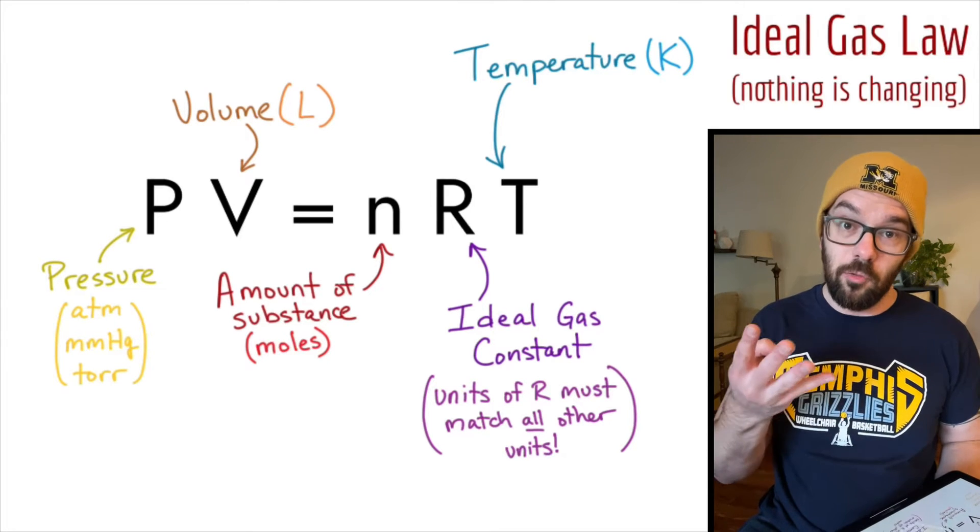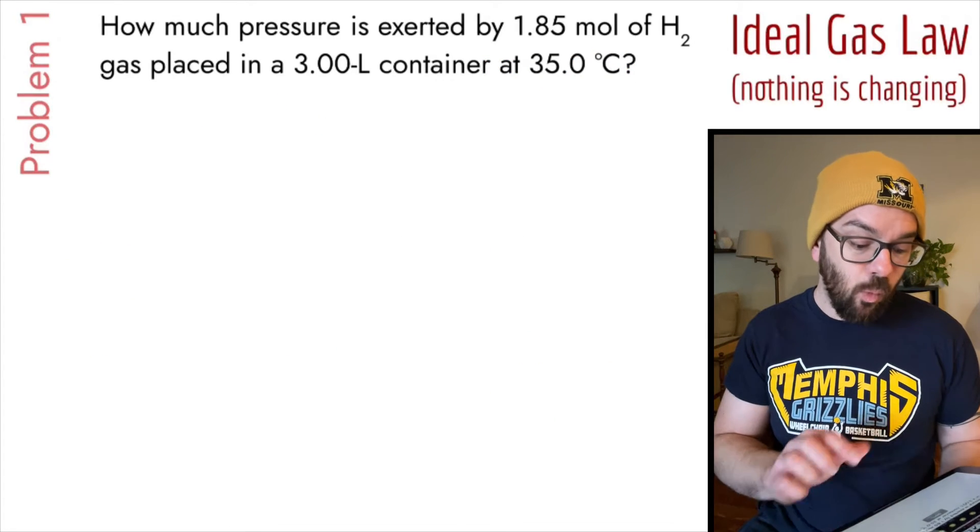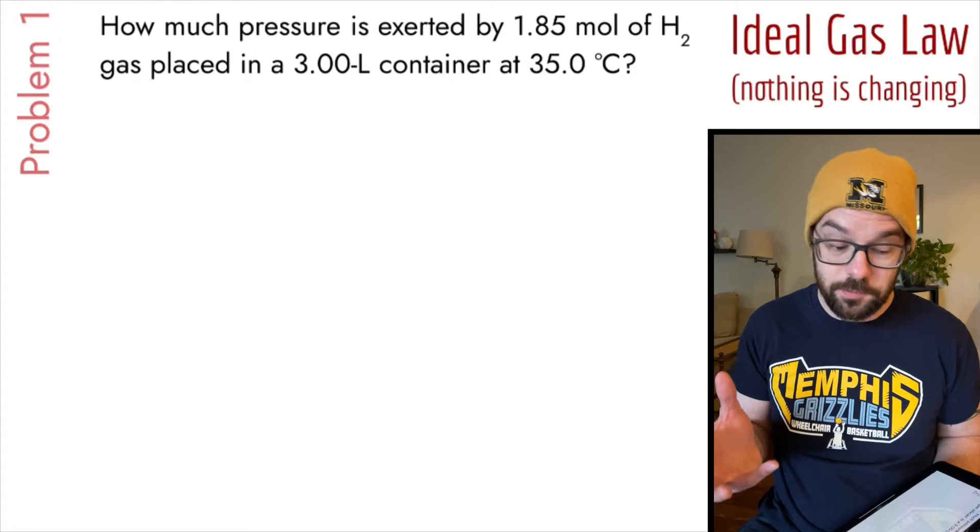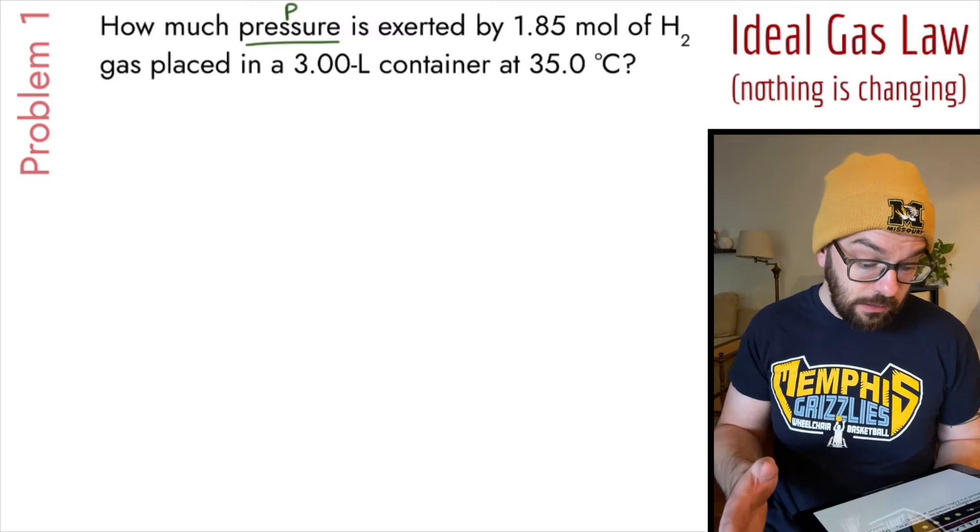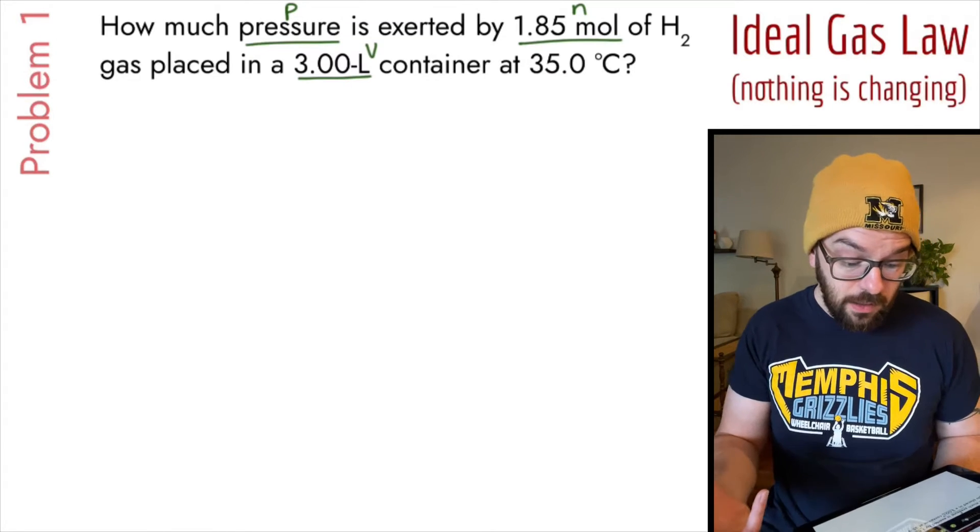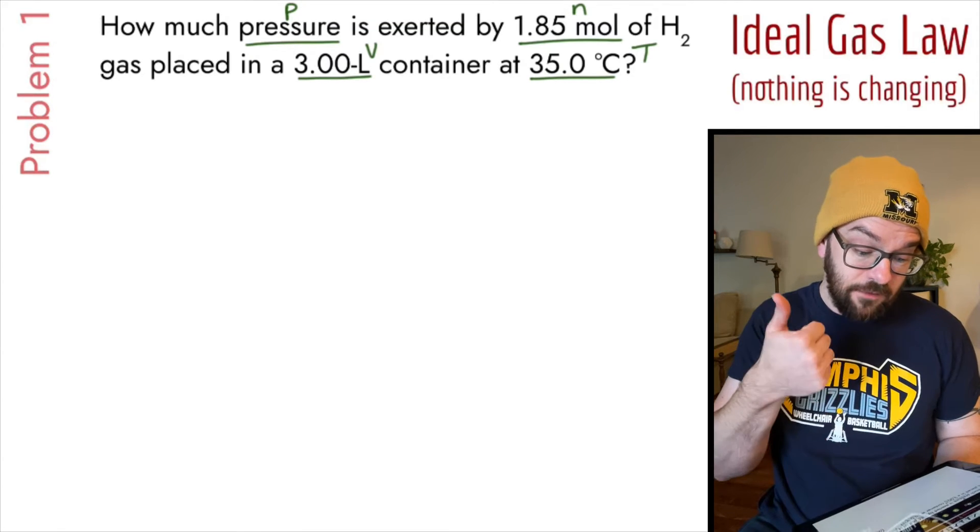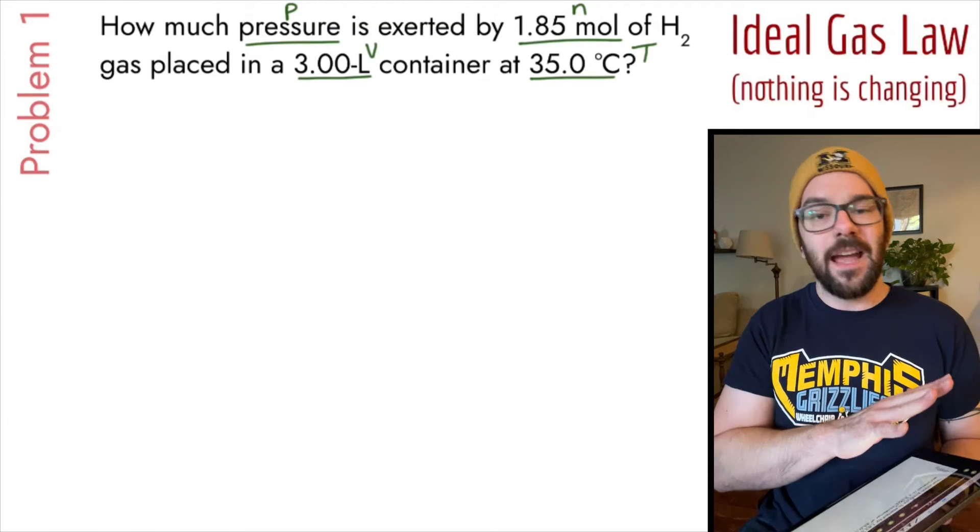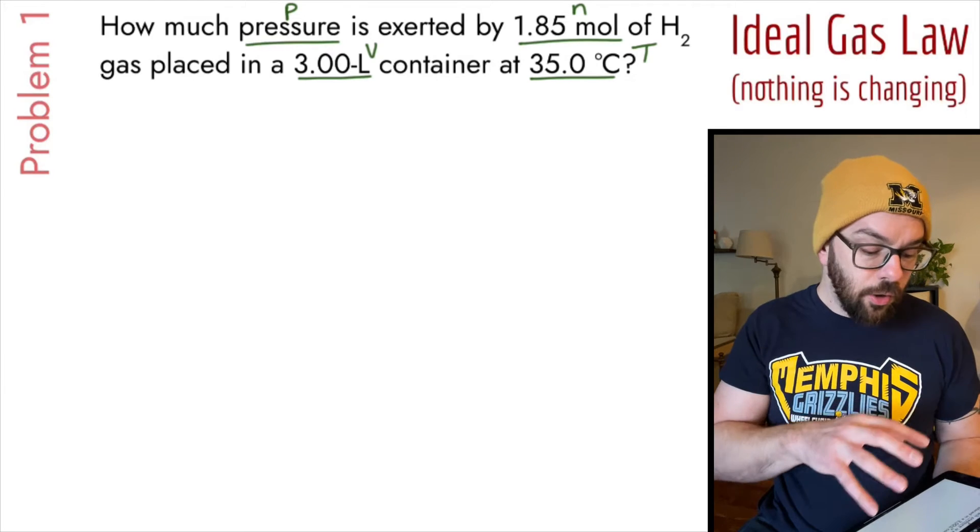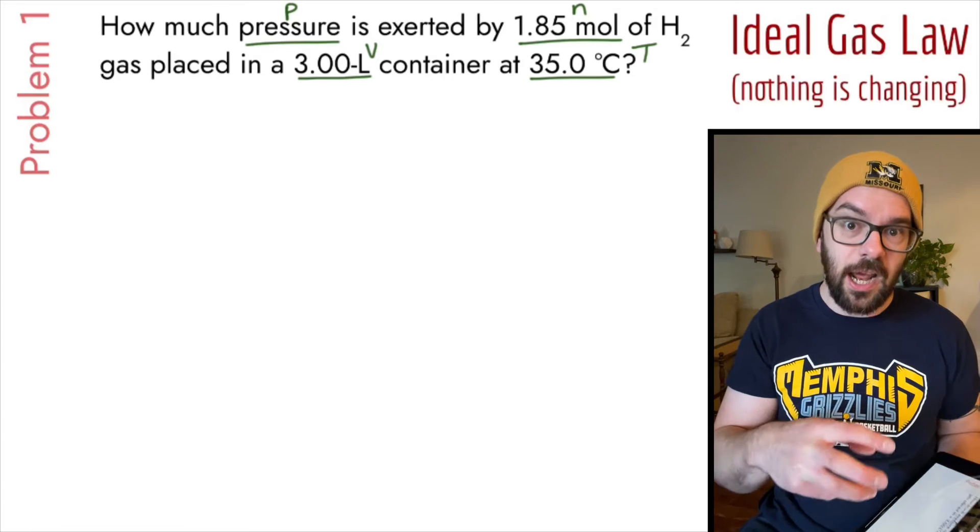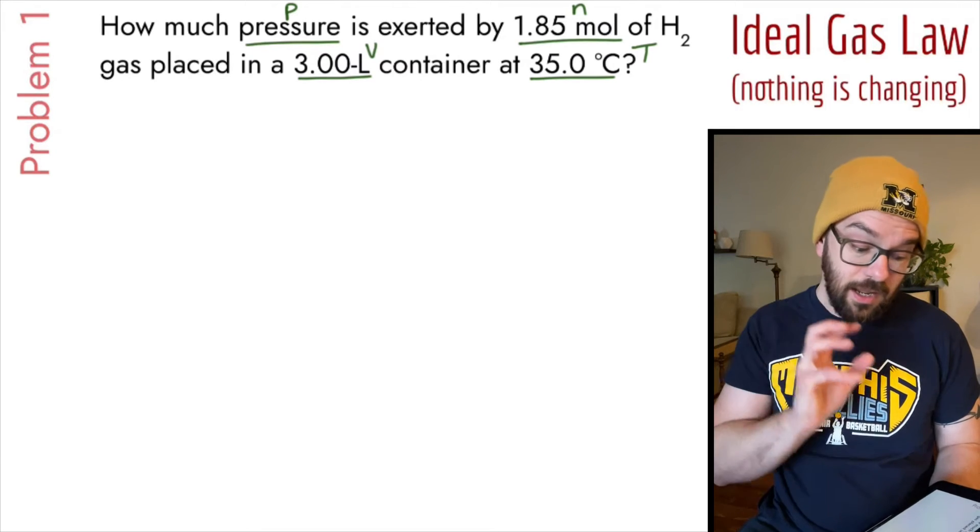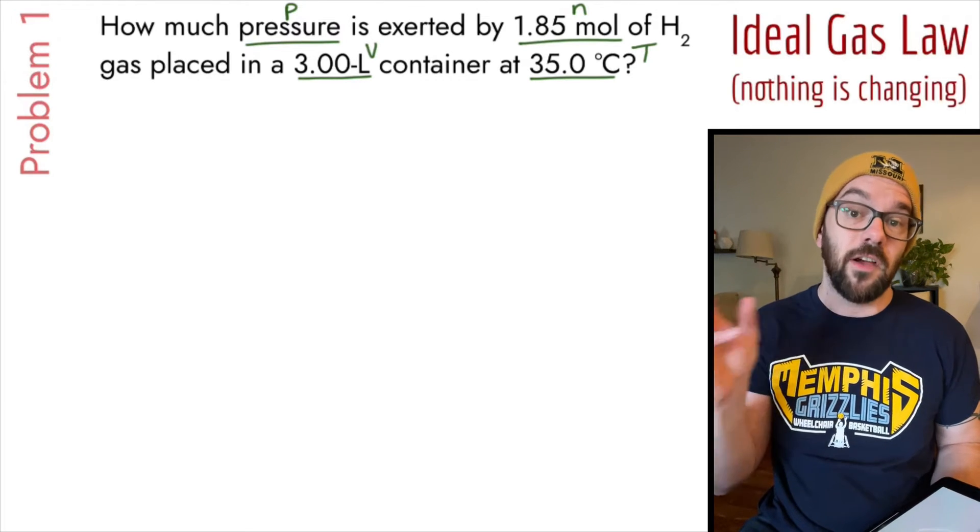So what does this equation allow us to do? Well, if we know three of the variables, we can solve for the fourth one. Our first problem says how much pressure is exerted by 1.85 moles of H2 gas placed in a three liter container at 35 degrees Celsius. So how do I know that I'm supposed to use the ideal gas law on this problem in the first place? Well, take a look at what information we know and what we're trying to find. We're trying to find the pressure. We know 1.85 moles, that's the amount of substance. It's placed in a three liter container, that's our volume. And it's at 35 degrees Celsius, that's our temperature. If I just look at the information they gave us, they gave us n, V, and T, and we're trying to solve for P.